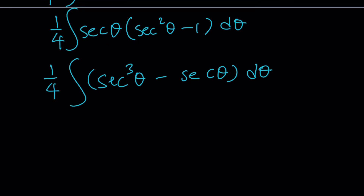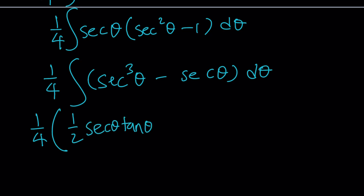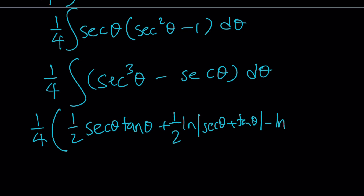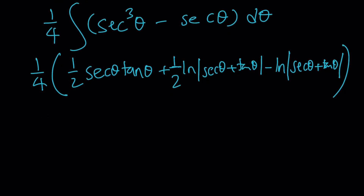Using the formula for the integral of sec³θ: it equals ½ sec θ tan θ + ½ ln|sec θ + tan θ|. And the integral of sec θ is ln|sec θ + tan θ|. Subtracting ¼ times the integral of sec θ from ¼ times the integral of sec³θ, and distributing the ¼, gives 1/8 sec θ tan θ minus 1/8 ln|sec θ + tan θ|.